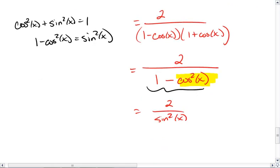Now remember your reciprocal identities. 1 over sine is cosecant, so this equals 2 times cosecant squared x.